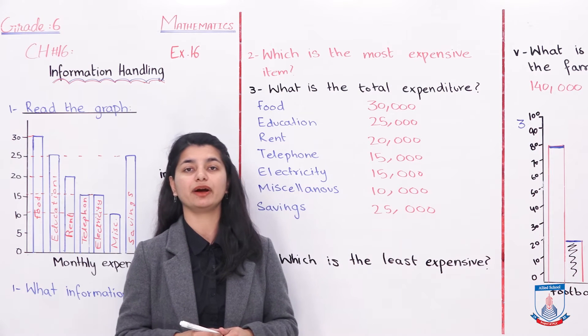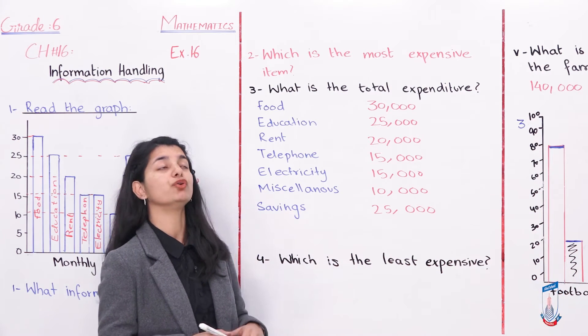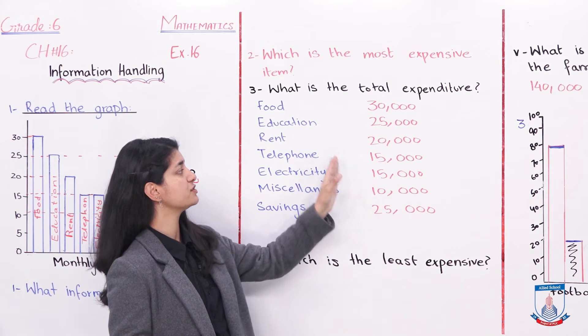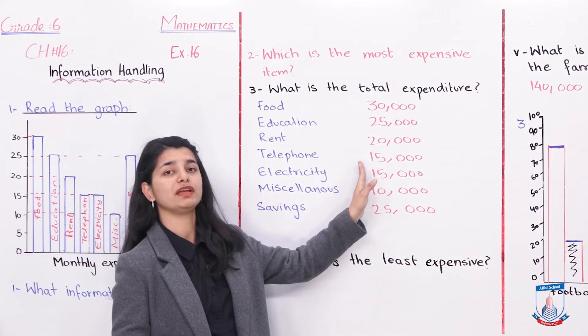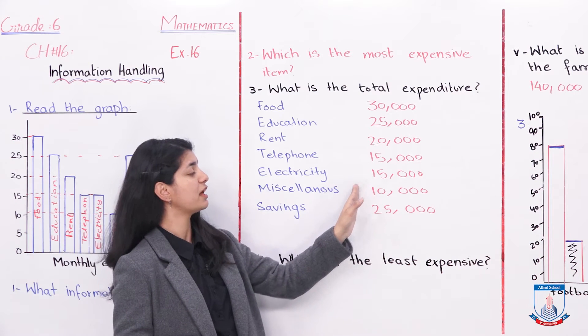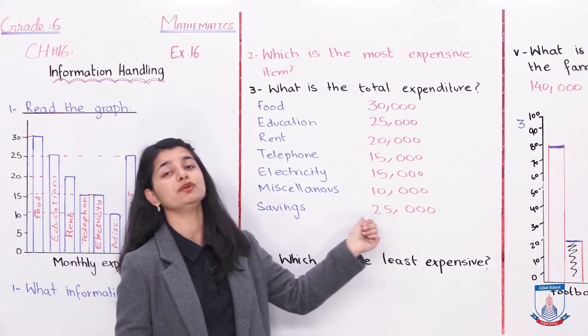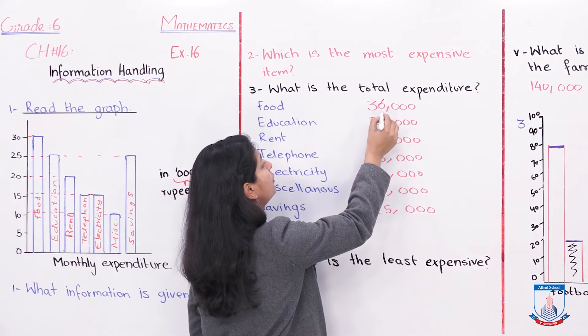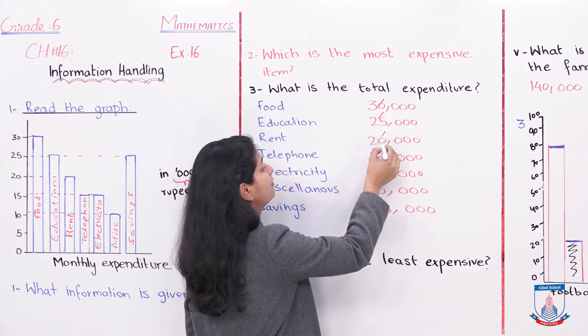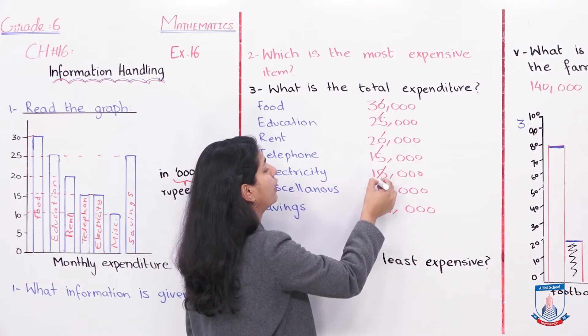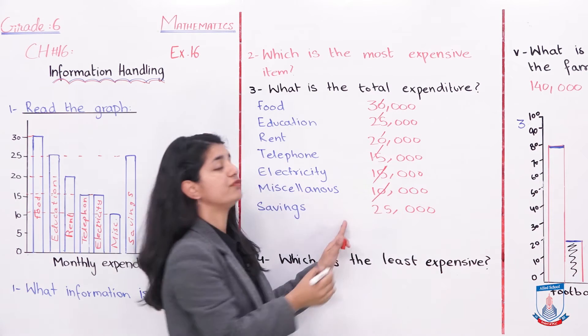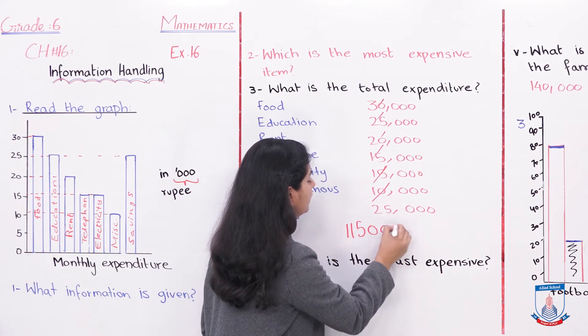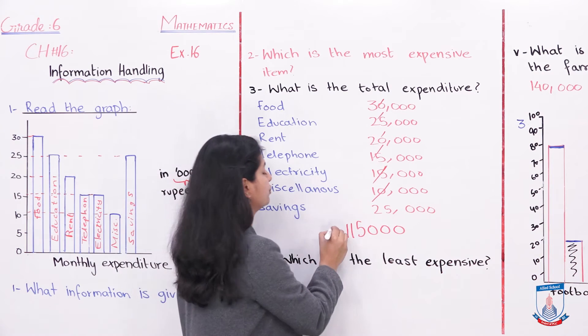In food, you will add all the amounts. Food is 30,000, education 25,000, rent 20,000, telephone 15,000, electricity 15,000, miscellaneous expenses 10,000, and our savings are 25,000. When you add them—30, 25, 55, 75, 90, 105, and then 115,000. So 115,000 is your expense, total expense.